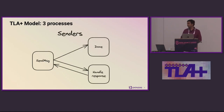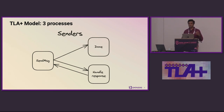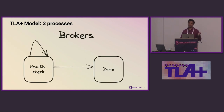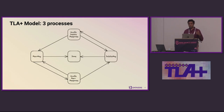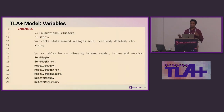In TLA+, we modeled Courier as a set of three processes. Senders send a message to the broker, wait for a response, then send another message — repeating until a pre-configured number of messages has been sent, then terminate. Brokers perform health checks on the various FoundationDB clusters. Receivers send a receive-message request to the broker, wait for a response, delete that message, wait for a response, and terminate once all queues have been drained. For FoundationDB, we used a variable to keep the number of states low.